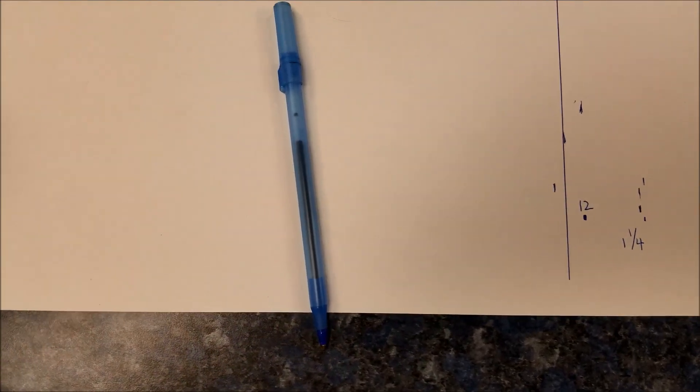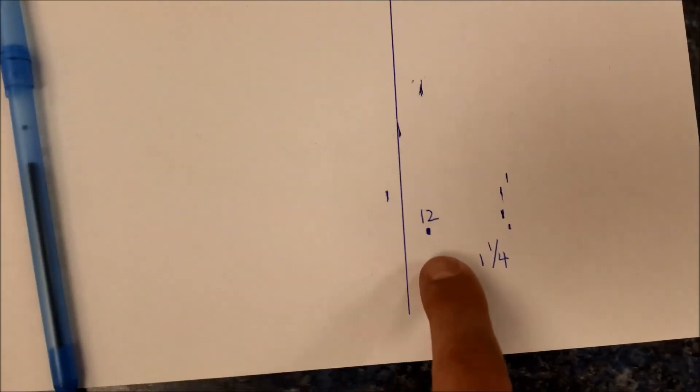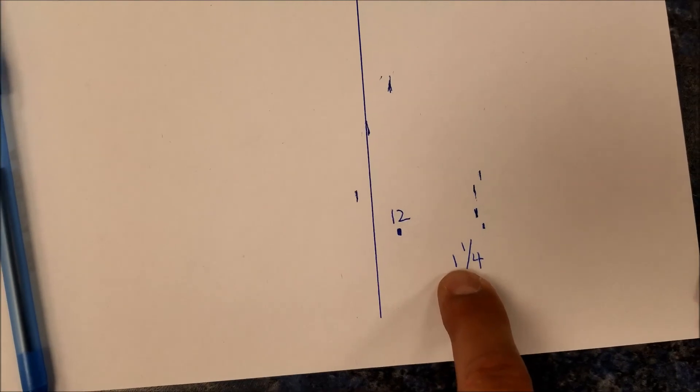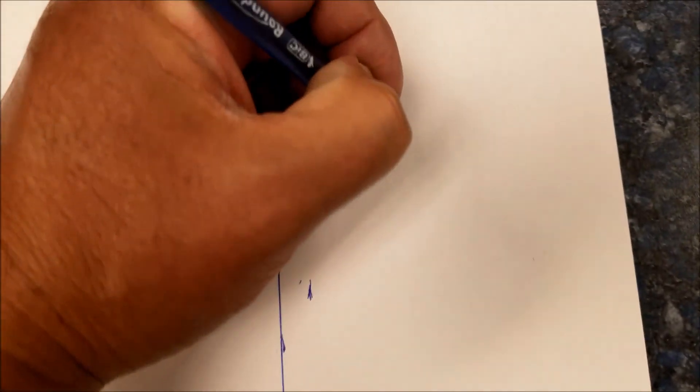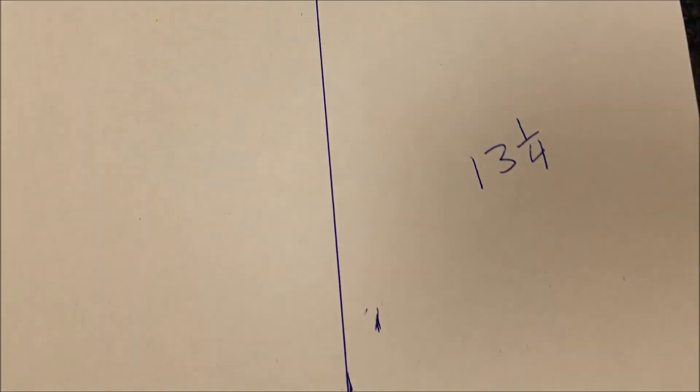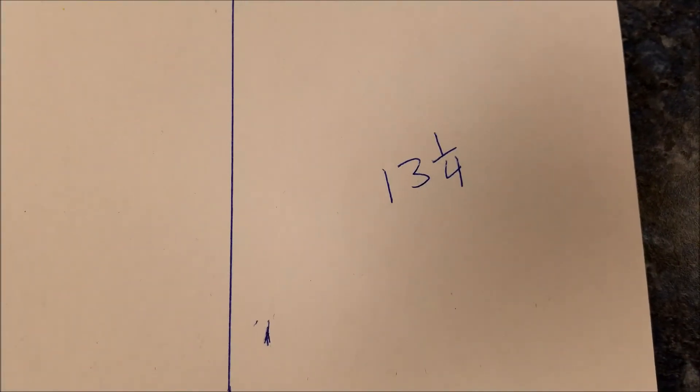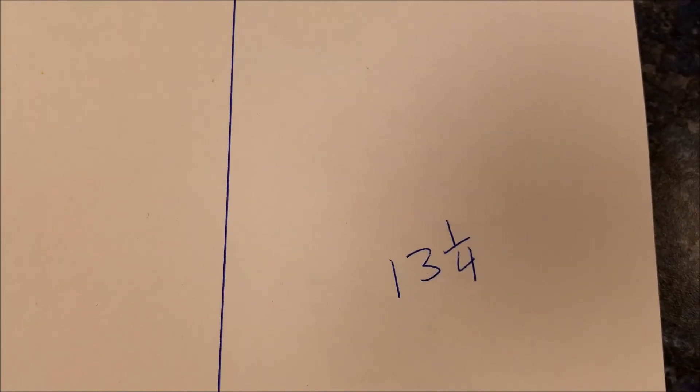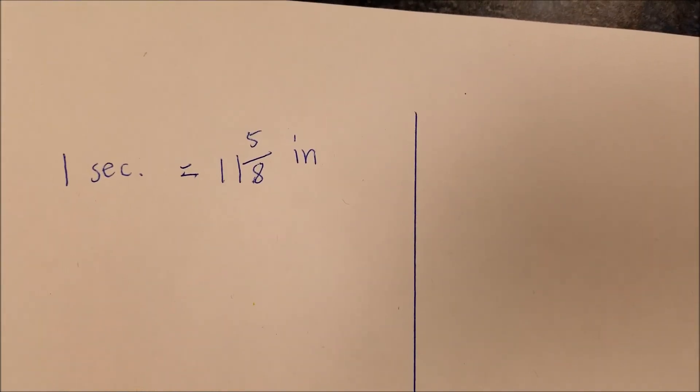Okay guys, I'm back. I already measured this out. From here to here was 12 inches and then it went one and one fourth past that. So at 100% speed, it went 13 and one fourth inches instead of the 11 and five eighths inches like it was yesterday at 70% speed.